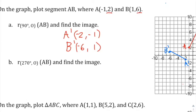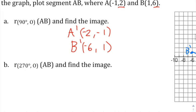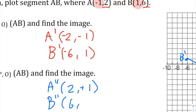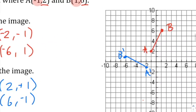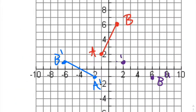Now rotate A and B the original points 270 degrees. That means changing the sign of the original X value and switching the order. A double prime: switch order to (2, -1), change original X sign — A double prime is (2, 1). B double prime: switch order to (6, 1), change original X sign — B double prime is (6, -1). Plotting those gives the 270-degree rotation.